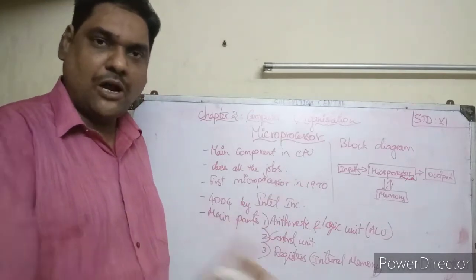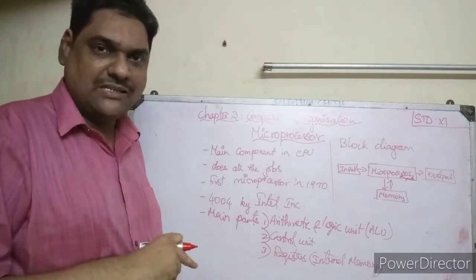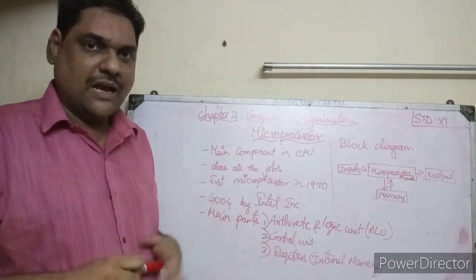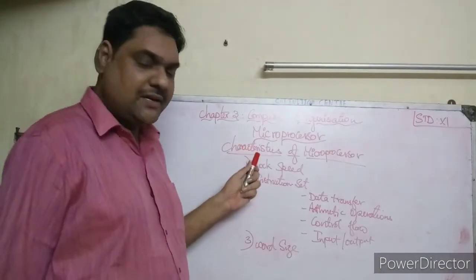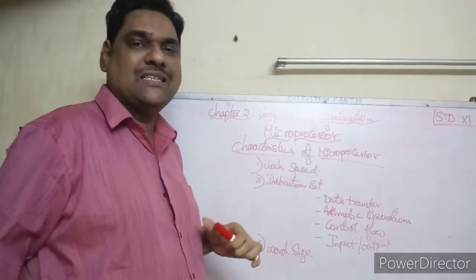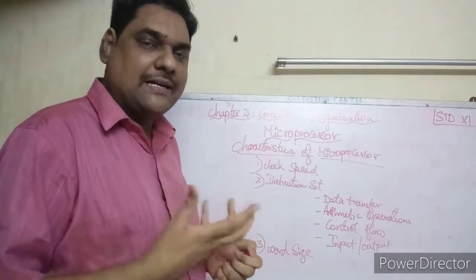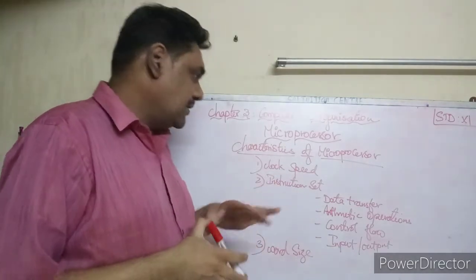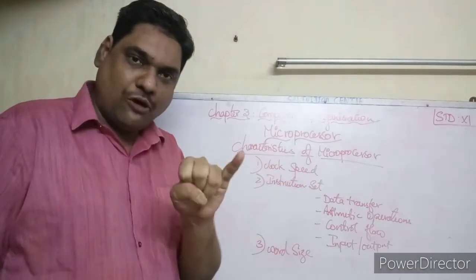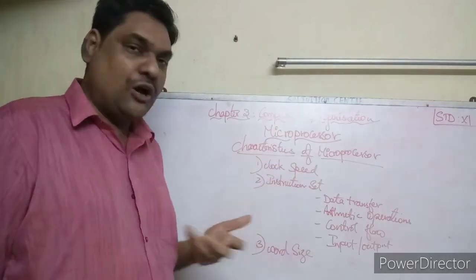The third main part is registers, which serve as internal memory within the microprocessor. These are the main parts of the microprocessor. Next, let us see the characteristics of the microprocessor.